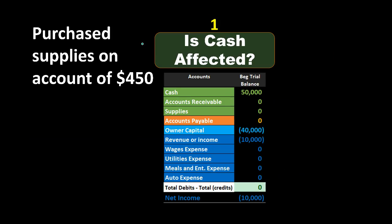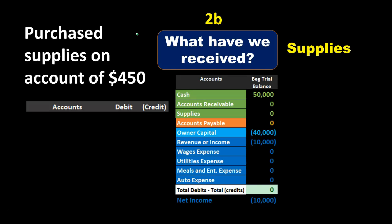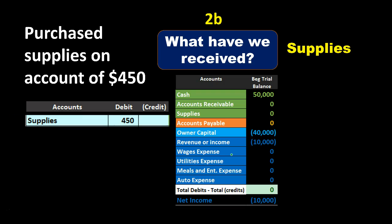Another example where cash is not affected: purchase supplies on account — meaning we purchased it on credit. Is cash affected? No, because it doesn't say 'paid,' so we probably didn't pay cash. If it says 'on account' or 'on credit,' cash is not affected. So we ask: what have we received? In this case, we got supplies. Looking through the chart of accounts, most textbooks will have you first put supplies on as an asset. Assets, like cash, have debit balances. We need to make supplies go up, so we do the same thing to it — another debit. So we debit supplies.